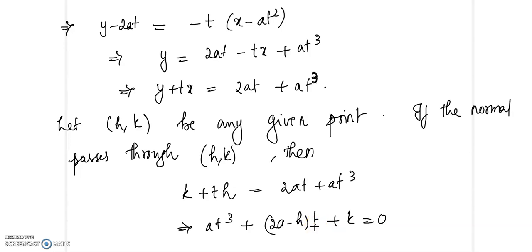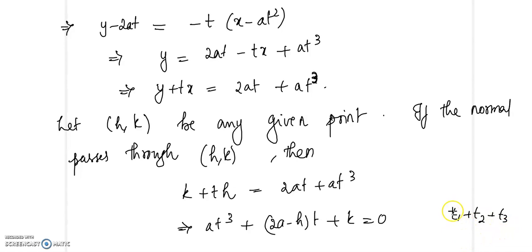If t1, t2, t3 are the roots of this cubic equation, looking at the coefficient of t squared, it is 0. By Vieta's formulas, the sum of the roots t1 plus t2 plus t3 equals 0. This means the sum of the coordinates — that is, the sum of the ordinates — equals 0, which is the result we need to obtain.